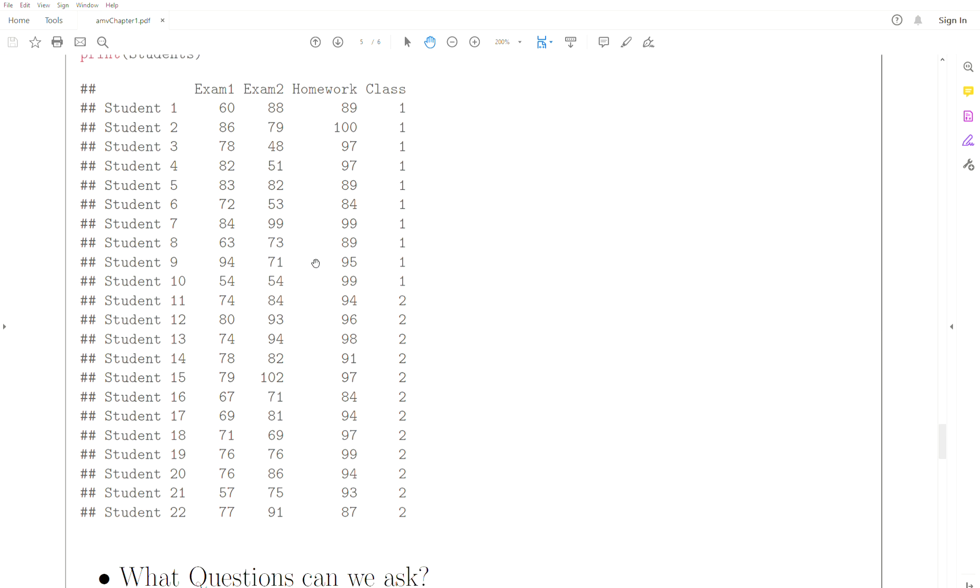Now what kind of questions can we ask of this data? What would be of interest? The first thing I think of is what is class? Class one, class two, are they both the same class? Are they different classes?